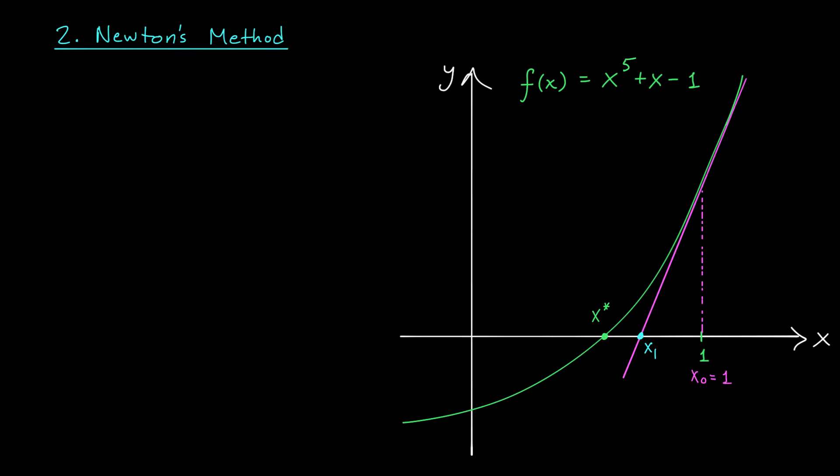If you'd like to move even closer to x-star, do the same process again. Consider the tangent line to your function at this new point x1. Figure out where that tangent line crosses the x-axis, and that will be your next point x2. Repeat the process as many times as you like. In many situations, you'll be moving closer and closer to the root after every iteration. And that, my friends, is Newton's method. We use a linear approximation over and over and over to bring us closer and closer to that root.